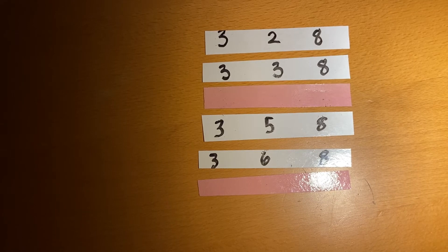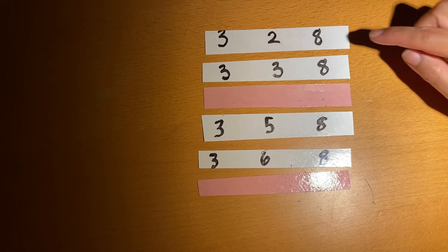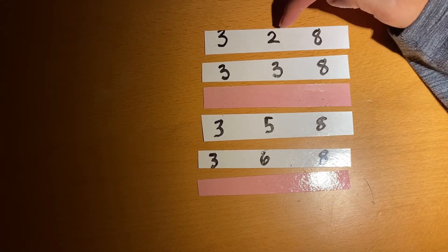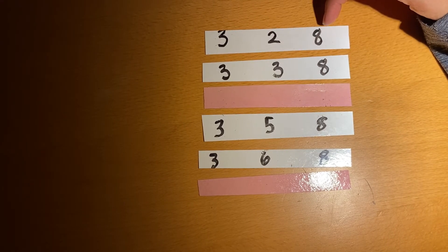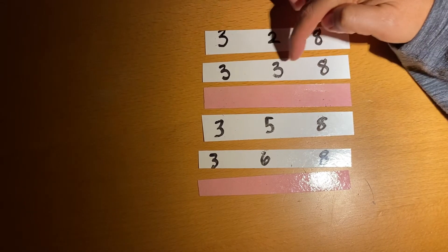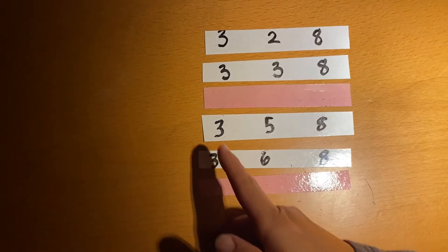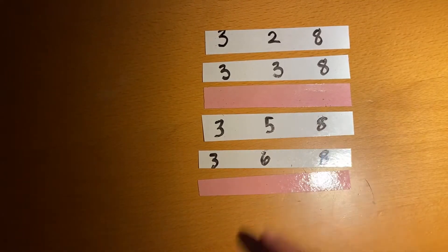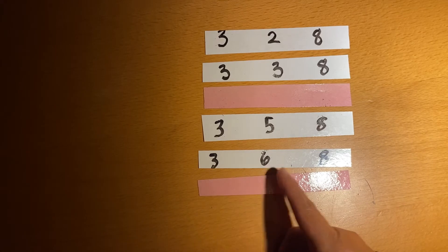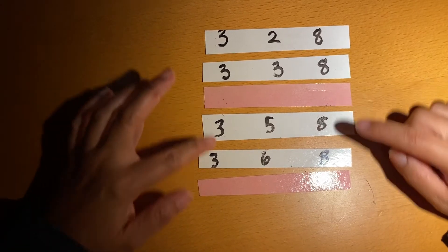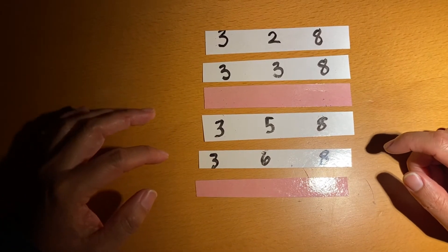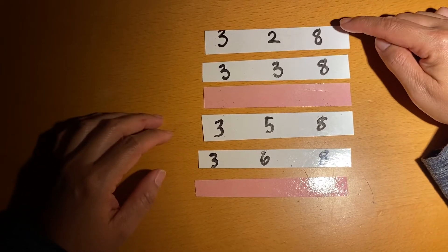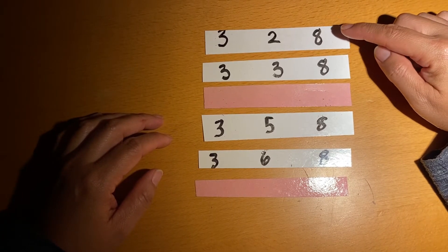Let's look at patterns. Here we have 328, then 338, 358, 368, and we are missing two numbers. So the way we can do that is by looking at the ones that are the same.